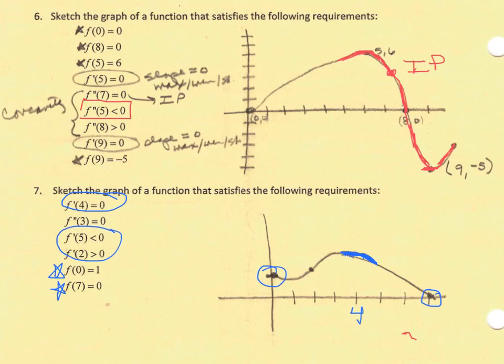Then to the left, f prime of 2 is greater than 0. If that's greater than 0, then that's going to be positive, so it looks like I have a max right there. I'm also seeing that I have an inflection point at f prime prime of 3. So that means that my graph is changing concavity at 3.